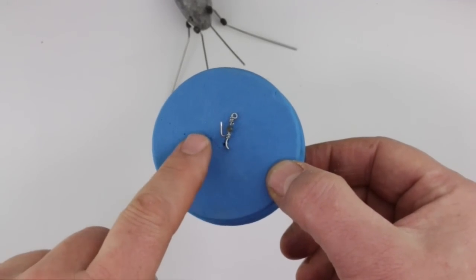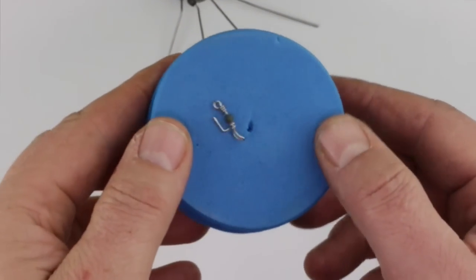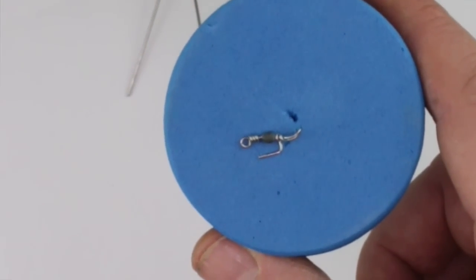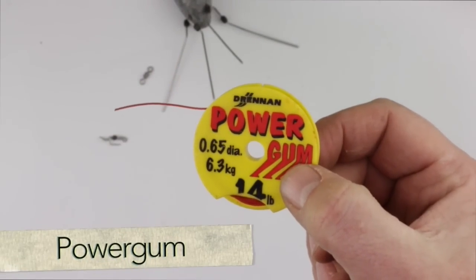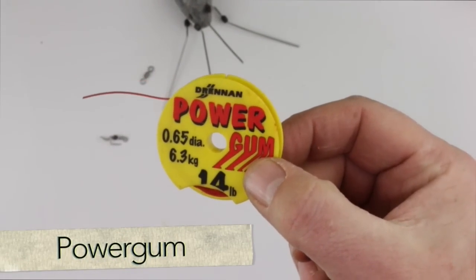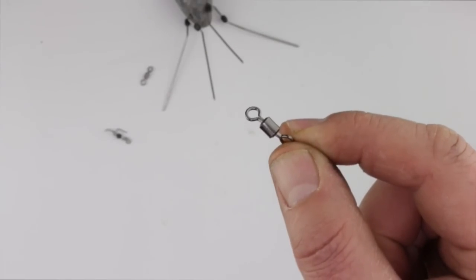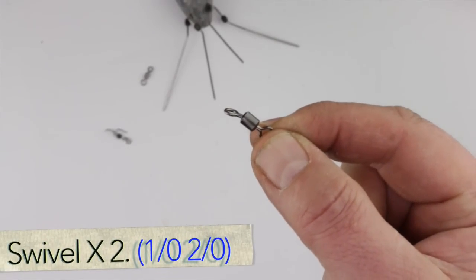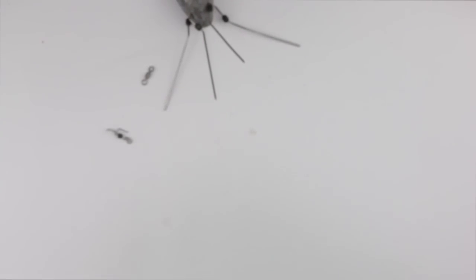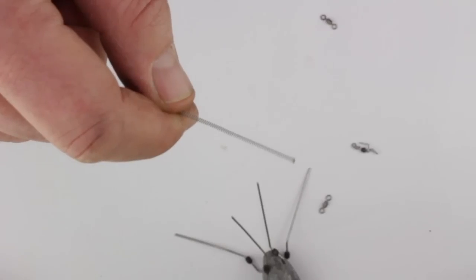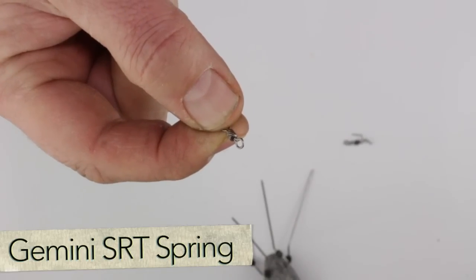You'll need a cascade swivel as well for this rig. These ones are from Gemini, nice little bit of kit. The rig utilizes those and power gum we're going to use today instead of crimps, a couple of reasons for that, and then just your normal swivels. We're going to go for two-o's today and one-o's.